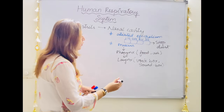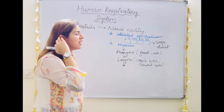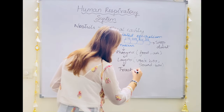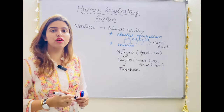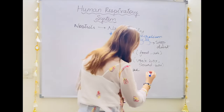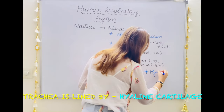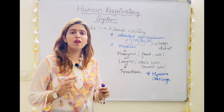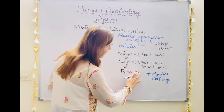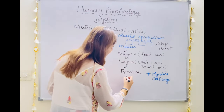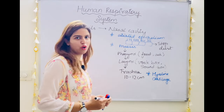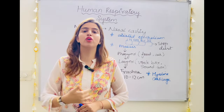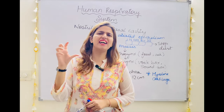After the larynx, air goes into the trachea — the proper tube. This trachea is lined by cartilage. For competitions, an important point: the trachea is lined by hyaline cartilage. The trachea is 10 to 12 centimeters long. It starts somewhere around your neck and extends into your thoracic chest cavity.